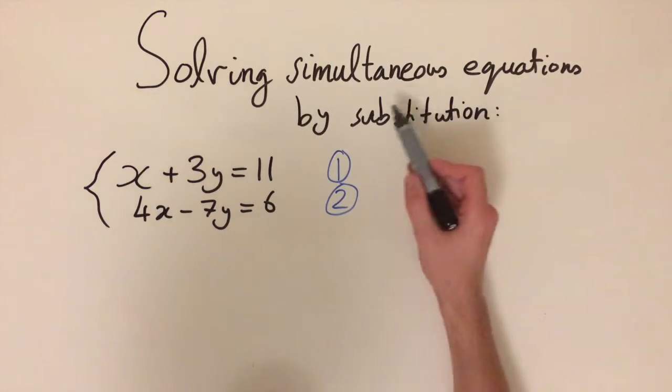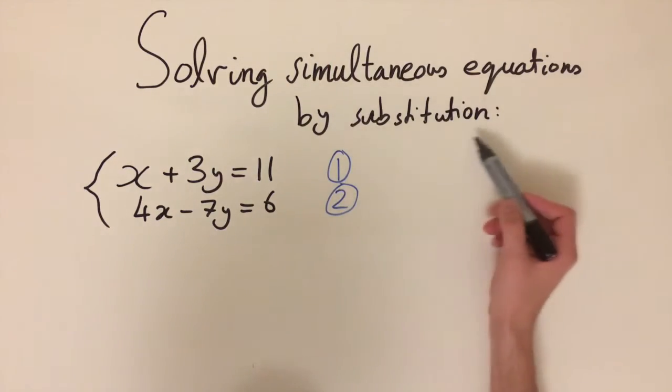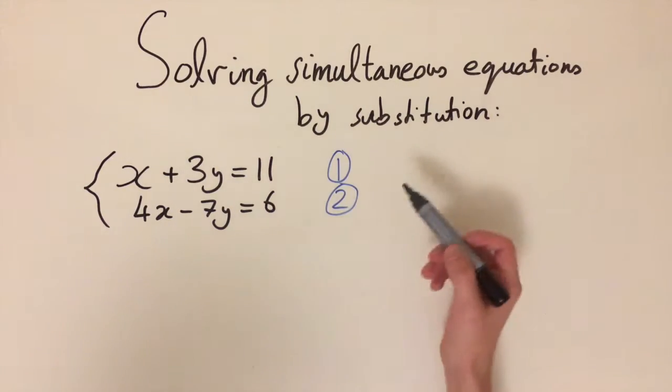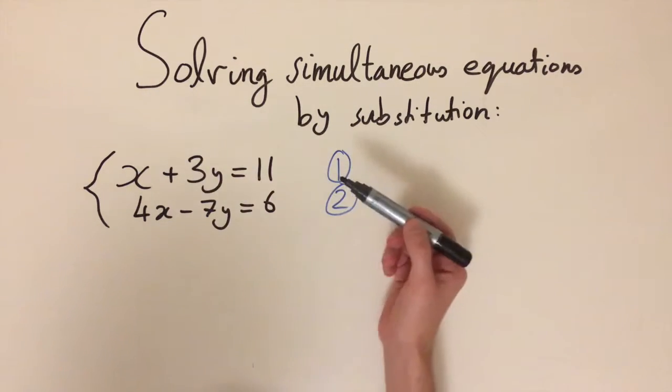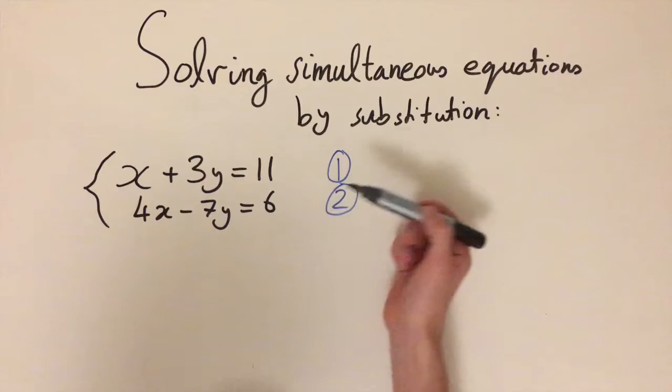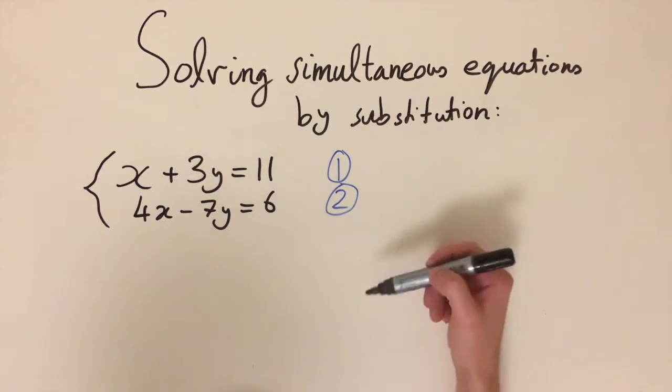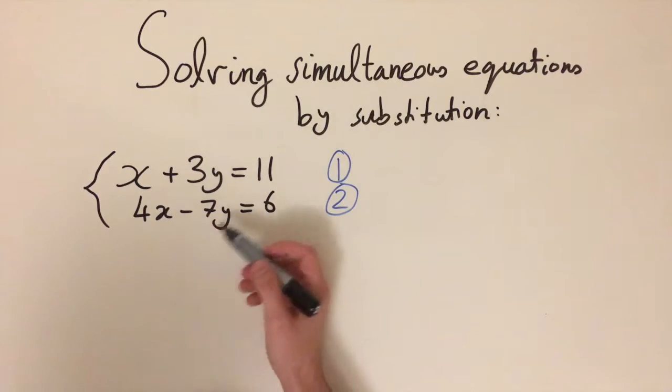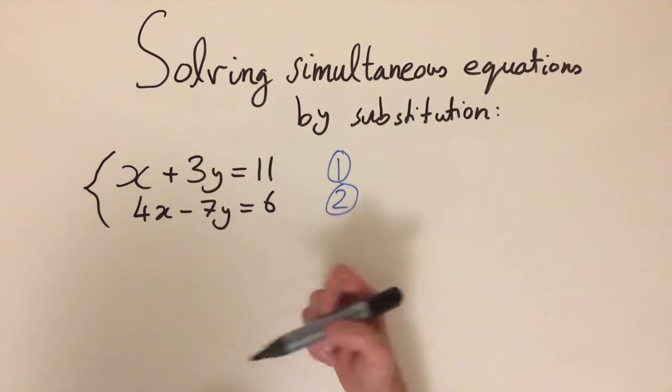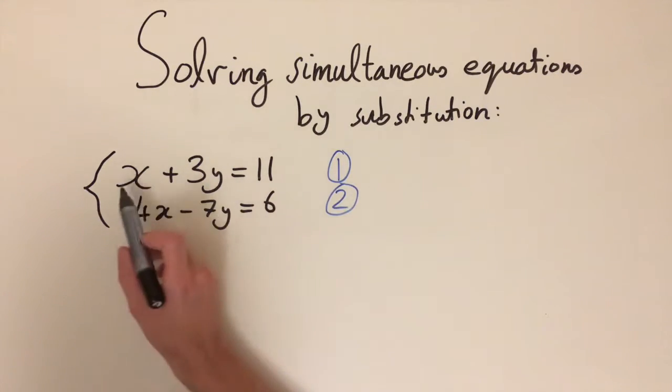In this video we're going to be solving simultaneous equations by the method of substitution. This means we rearrange one of the equations and substitute it into the other one. This can be quicker than elimination, the method we looked at in the last video, if we already have a variable isolated on its own. In this case, we have an x with only one coefficient.